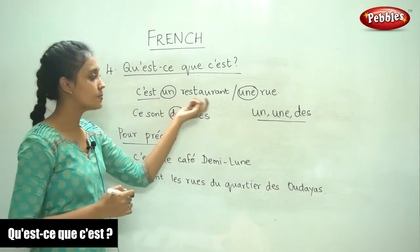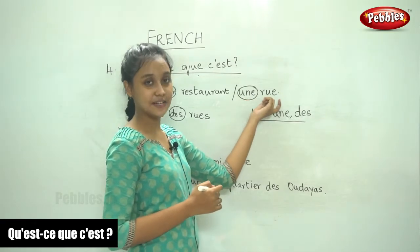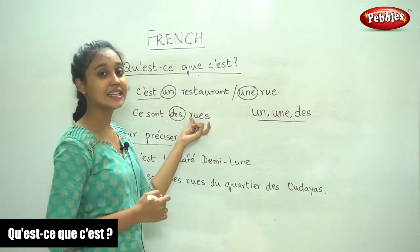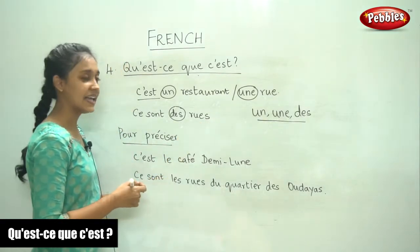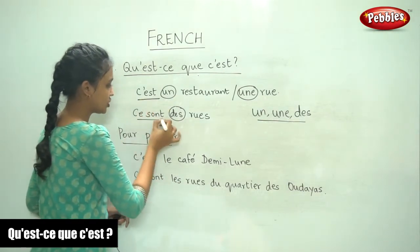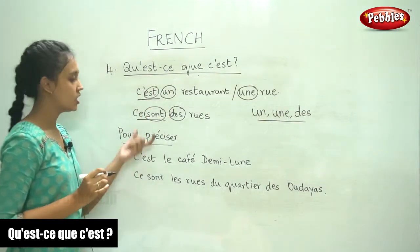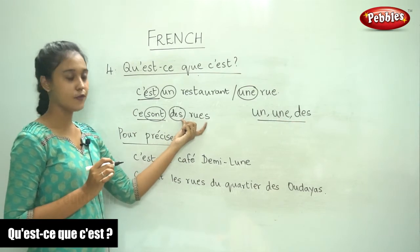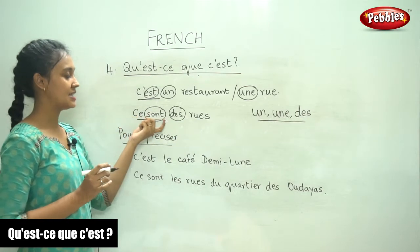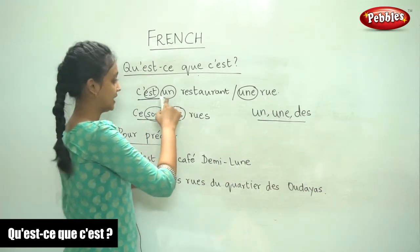Des comes before a noun that is in the plural form. And because it is in the plural form, the verb also changes — 'C'est' becomes 'Ce sont.' So 'Ce sont des rues' — these are some streets. This is how we use the indefinite article: un, une, and des.